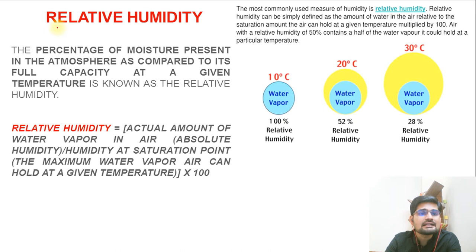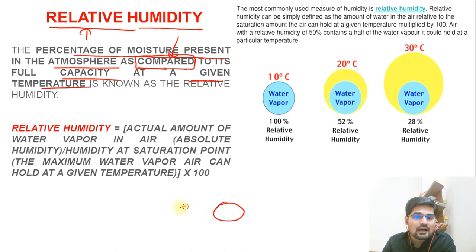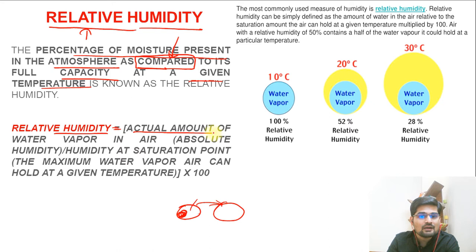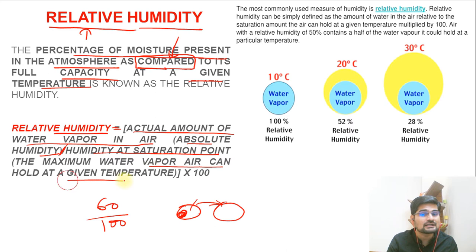The next type is called relative humidity. The word itself is relative - it means there is a comparison involved. It is the percentage of moisture present in the atmosphere in comparison to its full capacity at the given temperature. Relative humidity is expressed as: actual amount of water vapor (absolute humidity) divided by humidity at saturation point - the maximum it can hold - multiplied by 100 to create a percentage. Suppose I have a capacity of 100 and right now I am at 60 only - so 60 divided by 100.